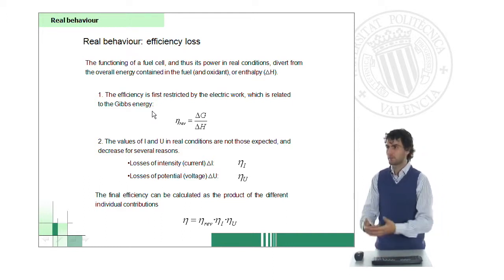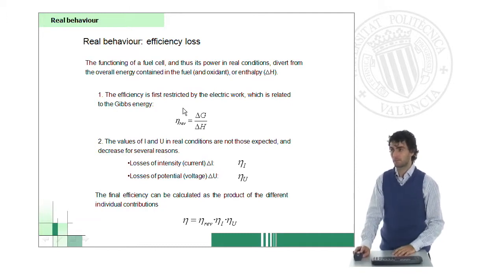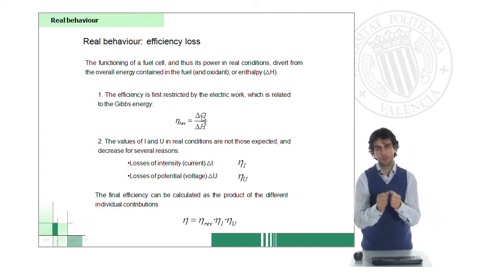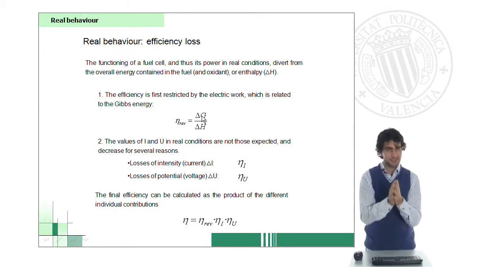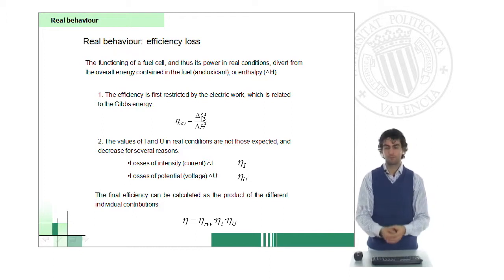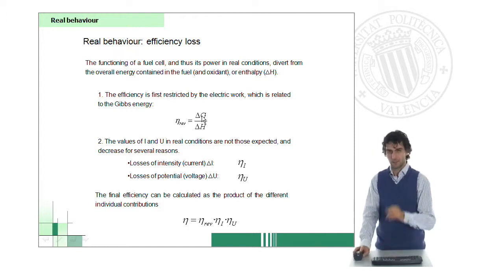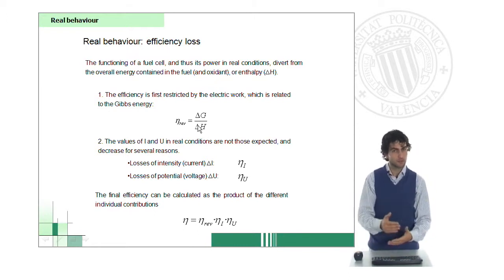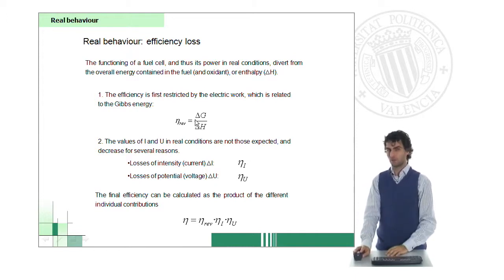So how can we measure this efficiency loss? The first efficiency loss that we have is reversible efficiency, and it's based on the fact that not all the chemical energy can be used in our application. Indeed, only the energy which will be represented by the free energy or Gibbs energy will be available in your fuel cell. This is a thermodynamic restriction. Don't forget, though, that this efficiency will be very high compared to other efficiencies like the Carnot cycle efficiency. So this is still a very good system.